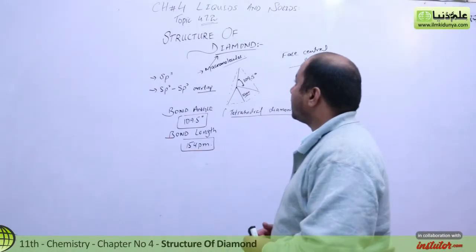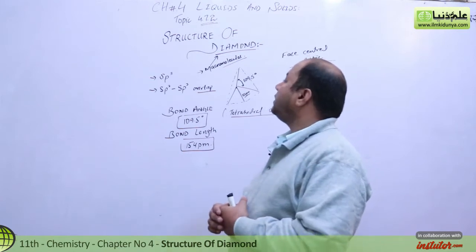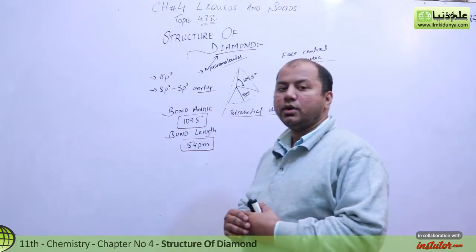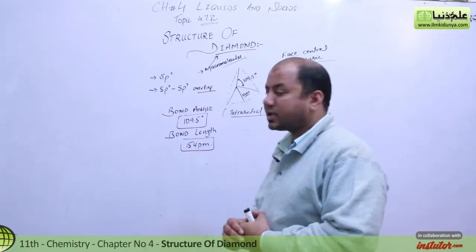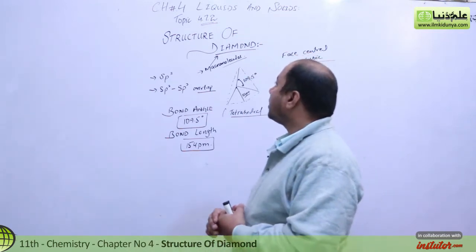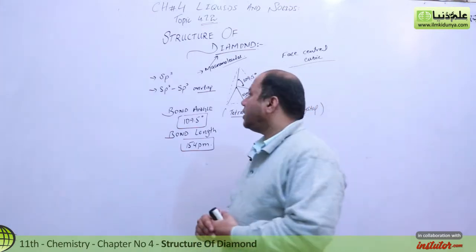Okay students, so we are talking about the topic liquids and solids. In this chapter, 4.7.2, properties of covalent crystals, we will now talk about the structure of diamond, which is a covalent solid, a covalent giant molecular solid.